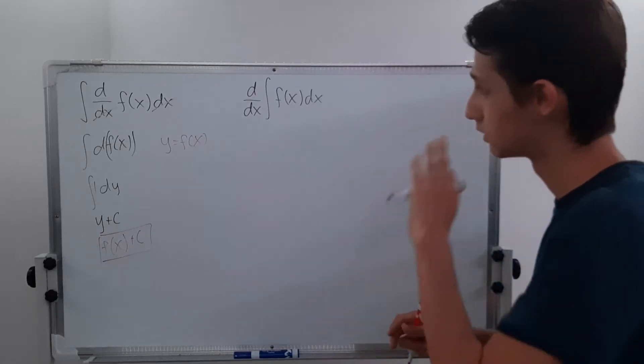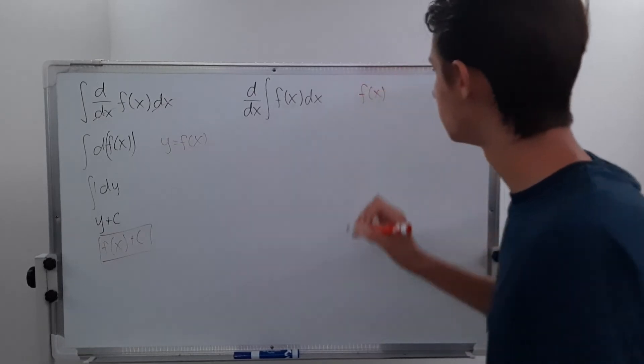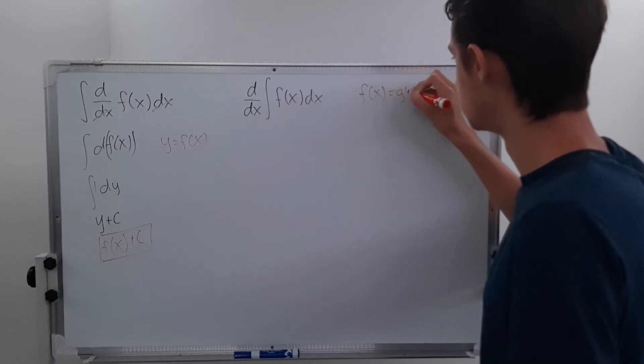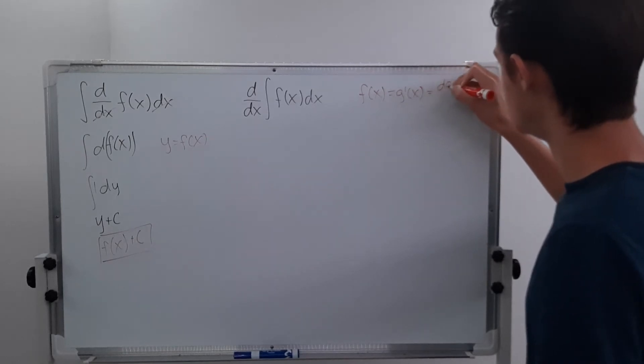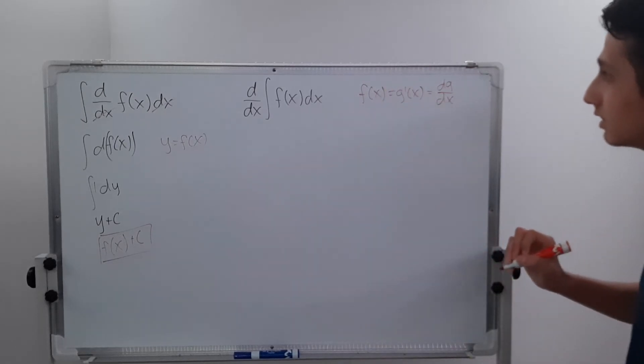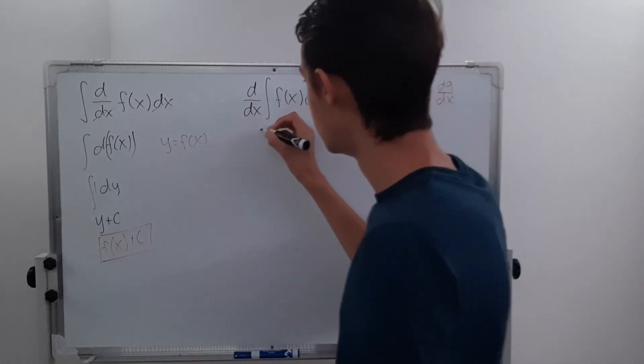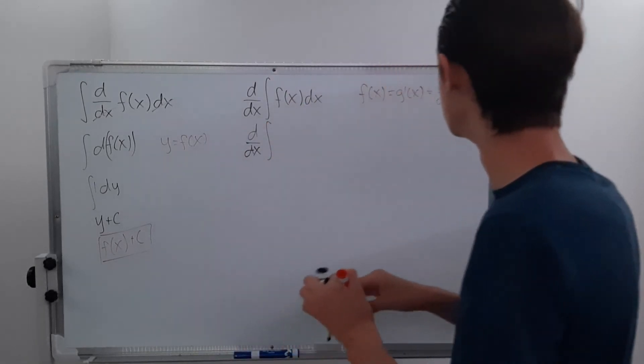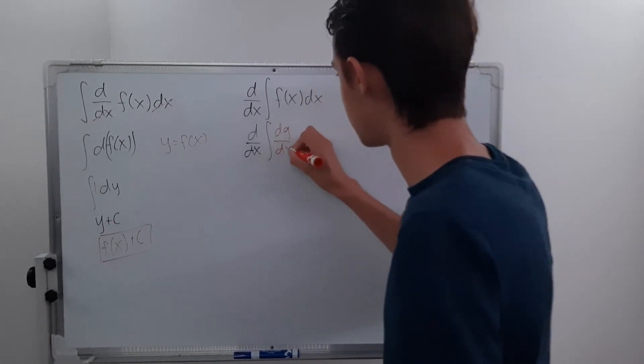So we can just assume that we set f of x to be equal to the derivative of some other function. Let's say g prime of x. So we can rewrite this in a new notation saying dg dx, so the derivative of our function g with respect to x. And this is actually pretty cool because it tells us that we're going to have d dx of the integral of dg dx dx dx.